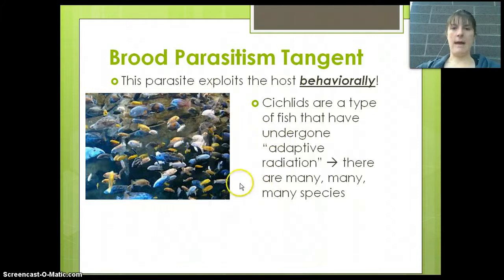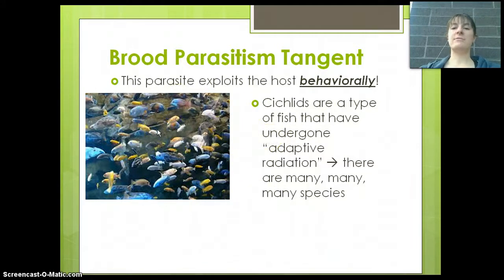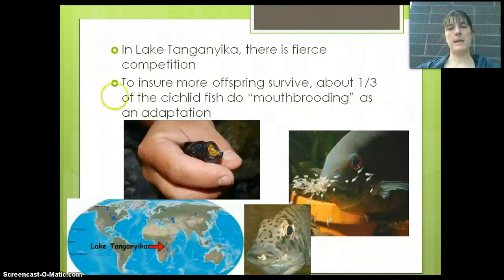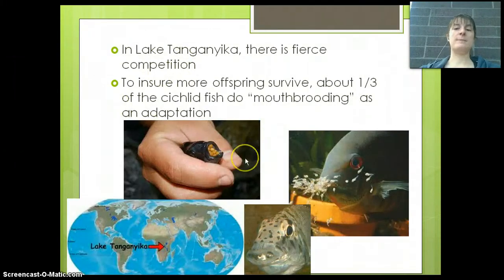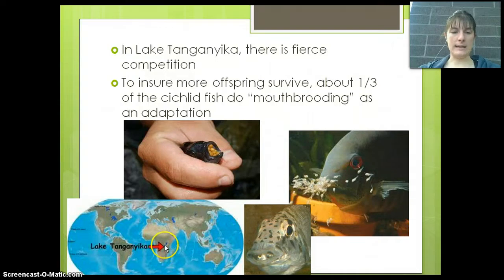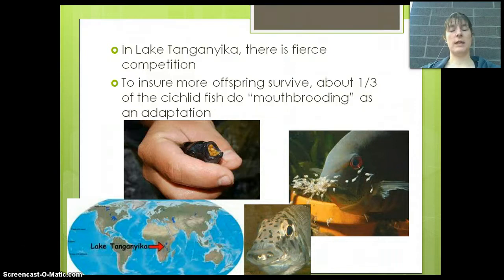First, cichlids. A cichlid is a group of fish that has undergone adaptive radiation, which means there are many, many different species of cichlid and they have unique ways to survive. In Lake Tanganyika — which is where the specific cichlids I studied were — Lake Tanganyika is in Africa and is one of three Rift Valley lakes that are really large and really deep. It's the long, skinny one. Down there, cichlids have gone through this adaptive radiation.